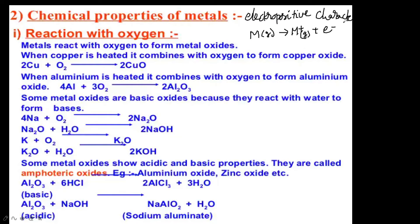The arrangement of metals in a vertical column in the order of decreasing reactivity is called the activity series. Now, chemical properties — first: reaction with oxygen. Metals react with oxygen to form metal oxides. When copper is heated it combines with oxygen to form copper oxide: 2Cu + O₂ → 2CuO. When aluminium is heated it combines with oxygen to form aluminium oxide: 4Al + 3O₂ → 2Al₂O₃. Be careful writing the formula — many write Al₂O₂ by mistake.